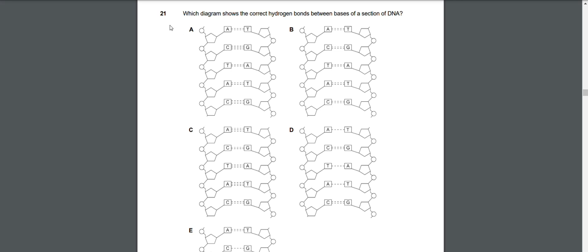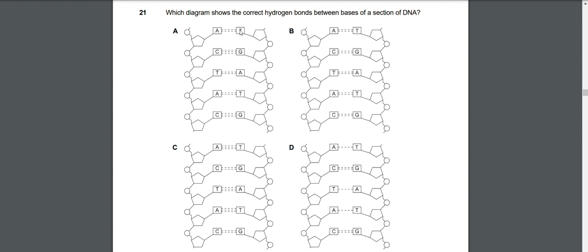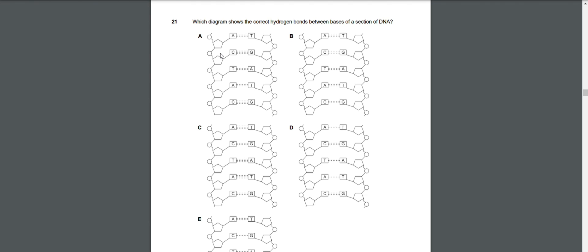Question 21: Which diagram shows the correct hydrogen bonds between bases of a section of DNA? In this question you just need to know that in DNA you find hydrogen bonds between the nitrogen bases. Between A and T bases you always find two hydrogen bonds, and between C and G you always find three hydrogen bonds.